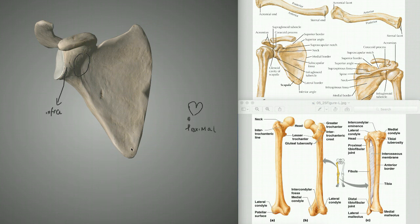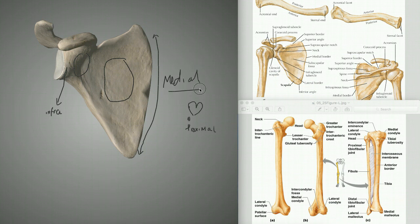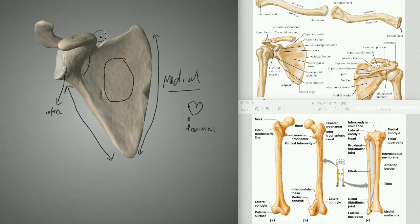And your inferior angle is present here. Then the main bit here is the subscapular fossa. So if this is the lateral side, using common sense you would know that this is the medial border on this side. Here's the lateral, and what we have here is the superior border. So if this is the medial border, lateral, superior - and you have your inferior angle, which is this curved bit here.